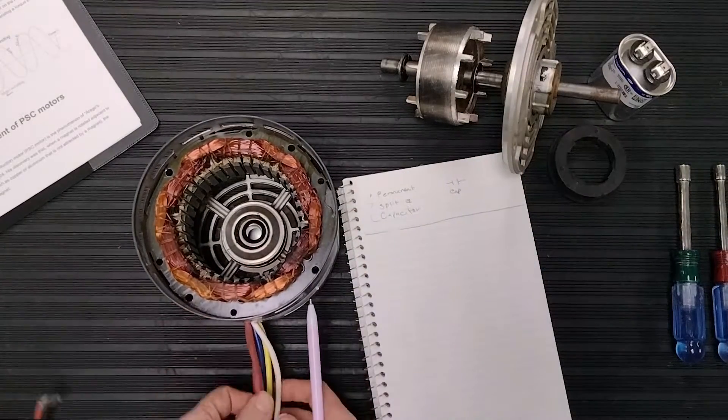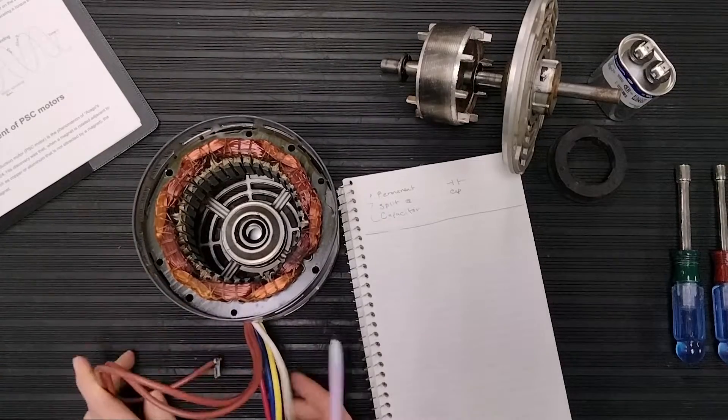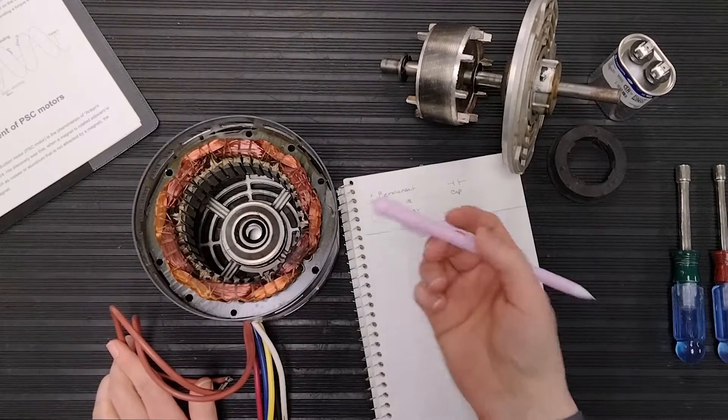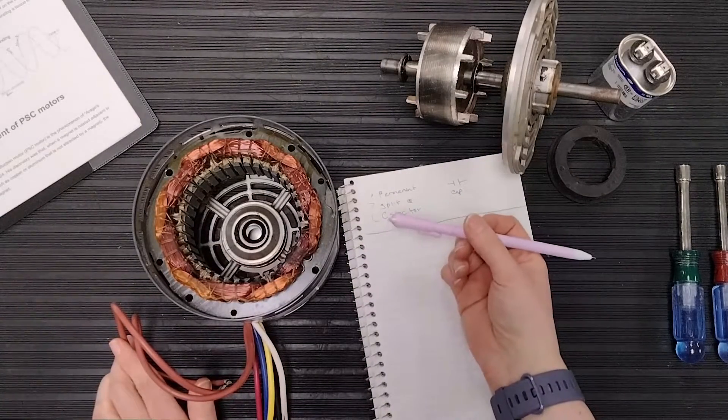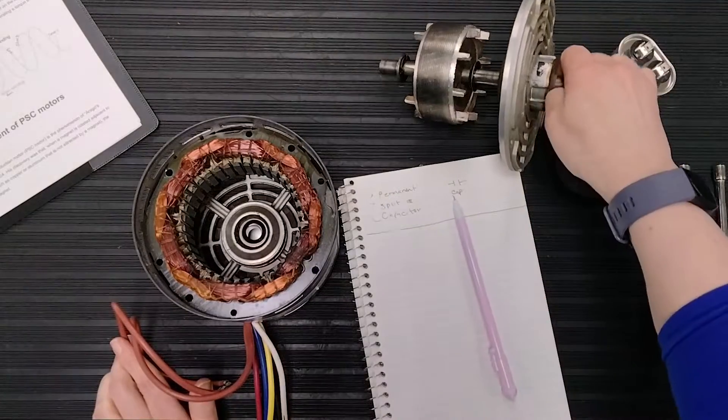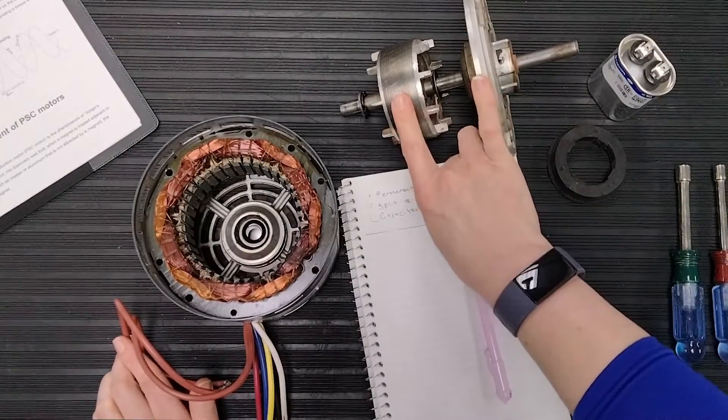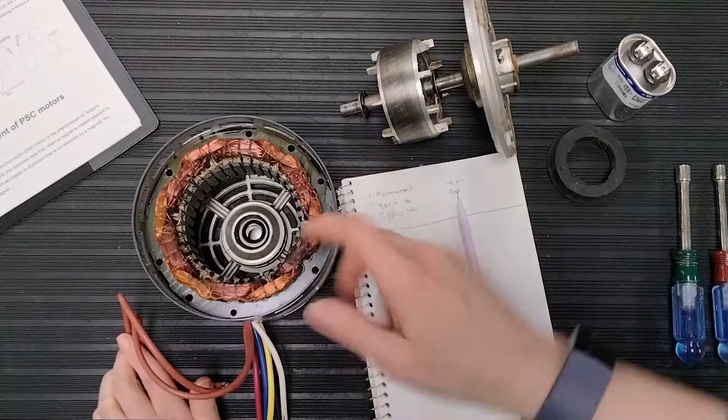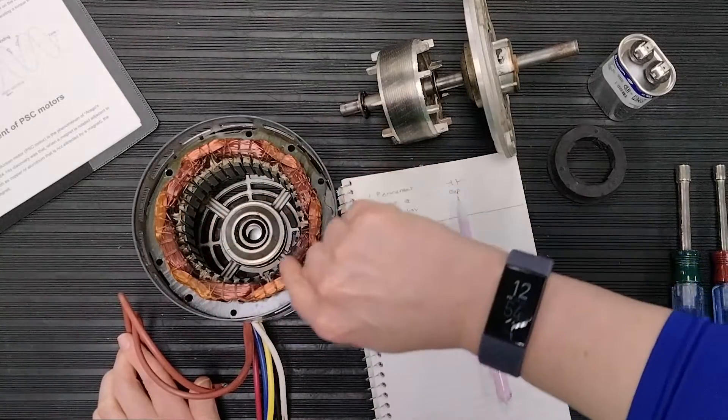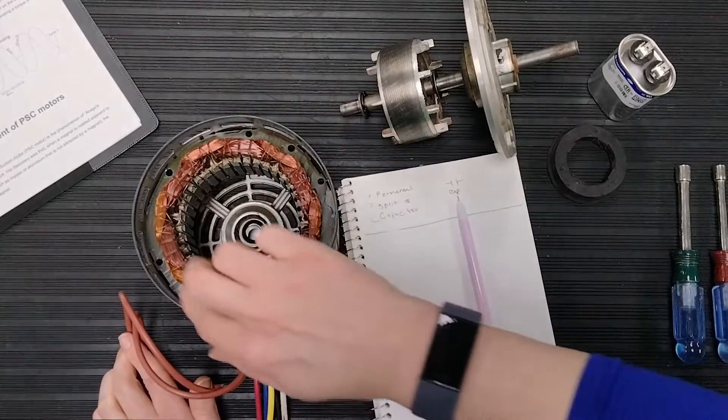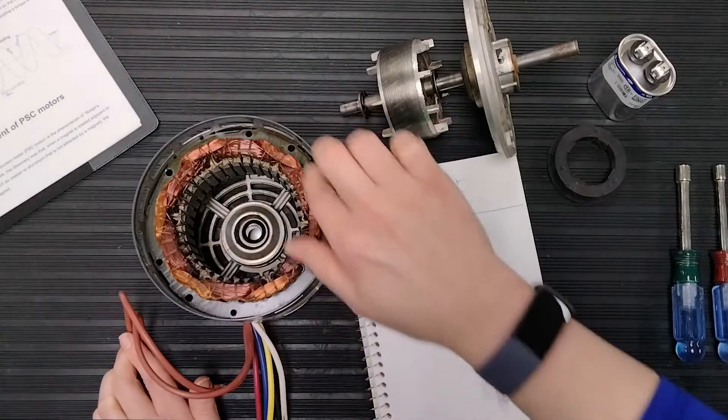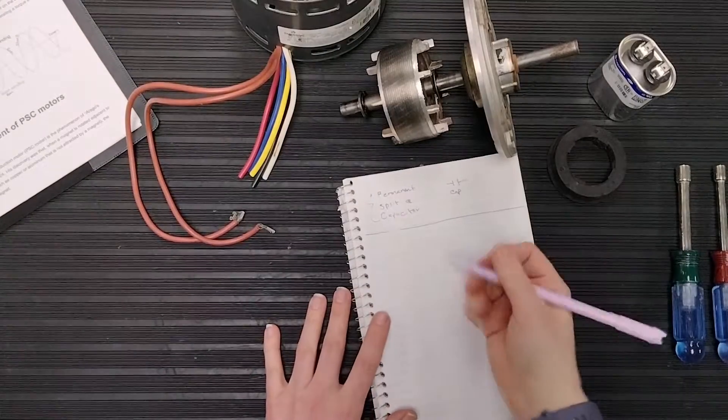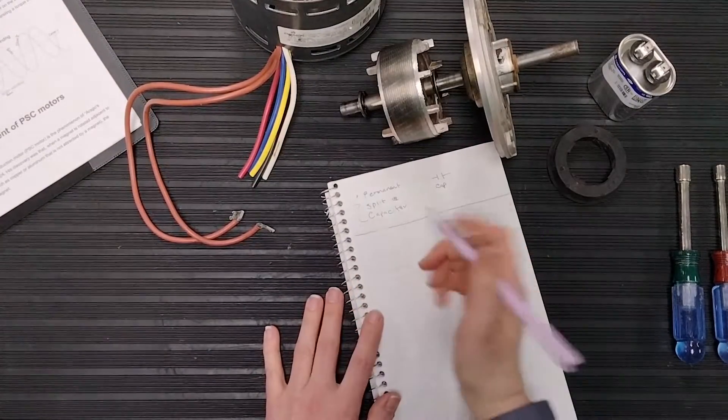Now, if you're wondering, when we talk about a start winding or an auxiliary winding, yes, this is to start the motor or start your rotor here so that it gets the force or the torque to begin moving in the correct rotation and to keep it going. Because remember, this is a magnetic field and obviously we're working with alternating current.